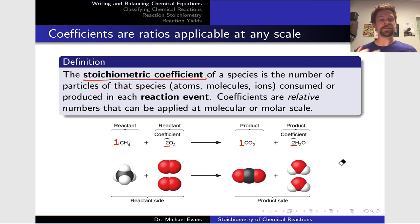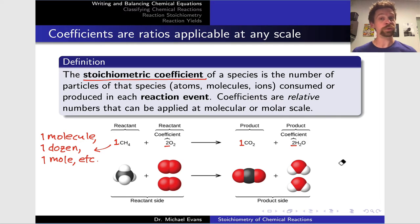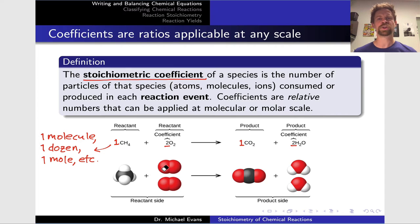These are relative numbers that can be applied at any scale. We can scale up all the stoichiometric coefficients to still depict the same essential chemical reaction — for example, scaling up to 2 to 4 to 2 to 4 still represents the same reaction, just at a different scale. The balanced chemical equation applies both at the level of a single molecule and at the level of a mole. We can talk about one molecule of CH4 reacting with two molecules of O2, or one mole of CH4 reacting with two moles of O2 to form one mole of CO2 and two moles of H2O.